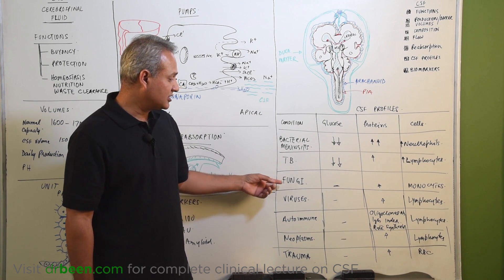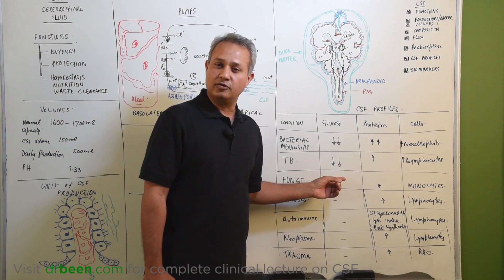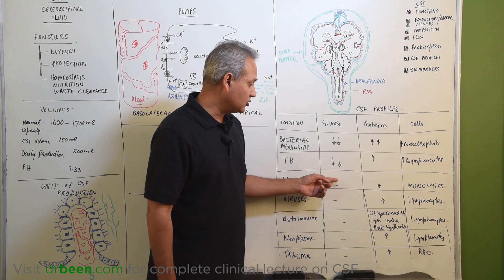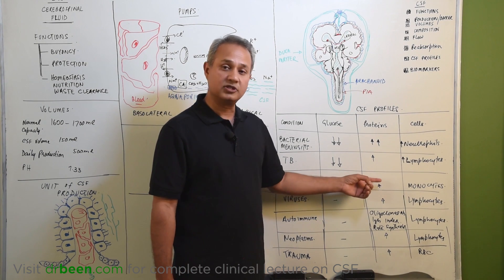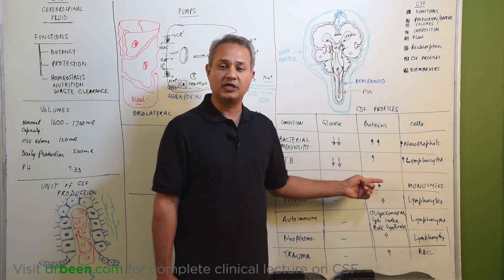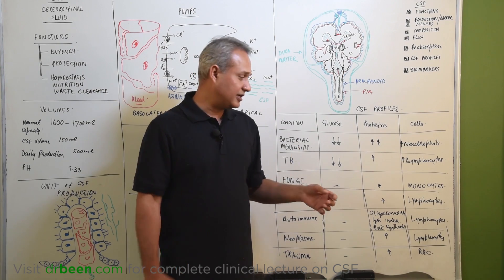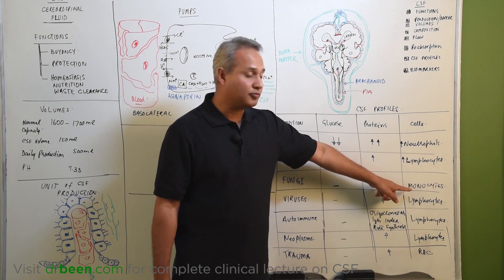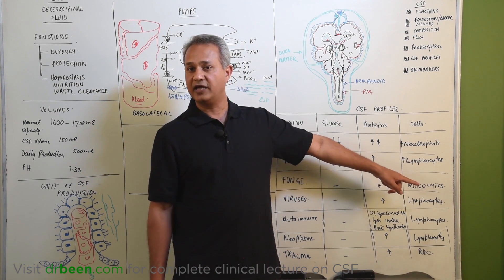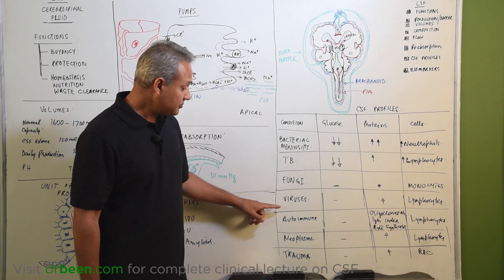Fungi, very similar to the bacteria. Fungi do not eat glucose that much as the bacteria do. So, not much change to the glucose, not much change to the protein unless there is big inflammatory reaction, but the cells are important. Monocytes are the ones that would handle the fungi. What is this? This is very important from USMLE point of view.